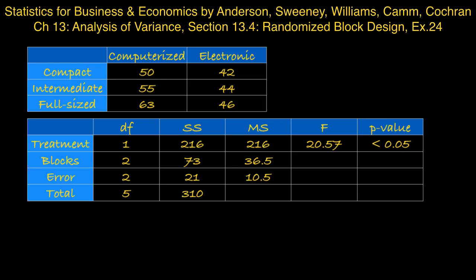And then to calculate the sum of squares for error, we take the total sum of squares, 310, minus the treatment sum of squares, 216, minus the blocks sum of squares, 73. And we obtain 21 for the error sum of squares.